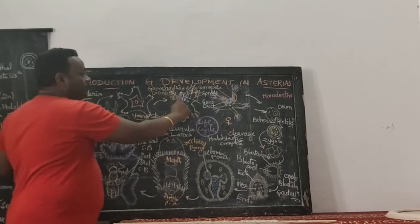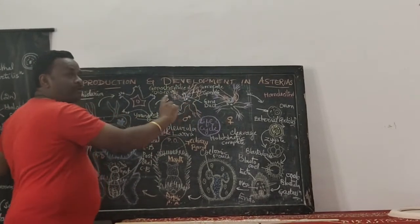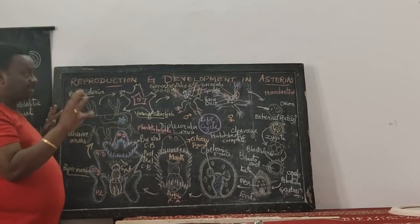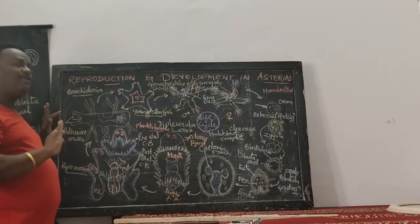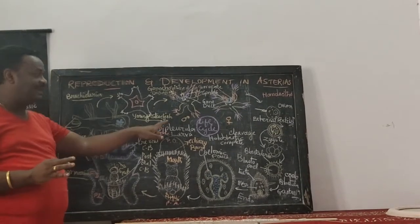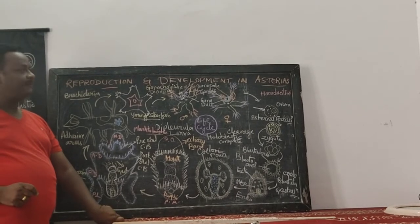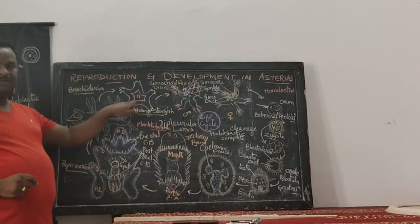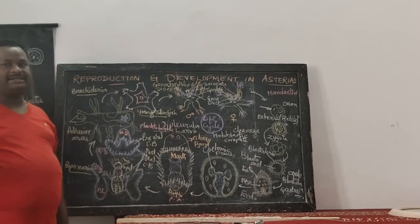Between all the arms, five pairs of gonads are present, five gonadal structures are seen, and five openings of gonopores are seen in each interradial region. This is with reference to the reproductive structures of gonads related to Asterias.